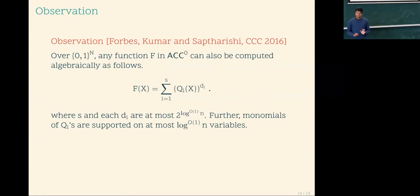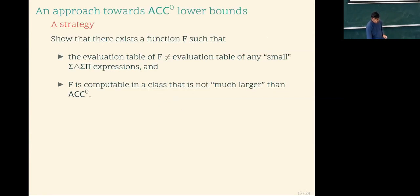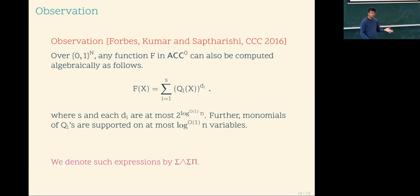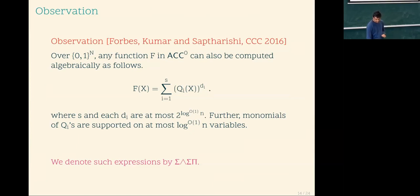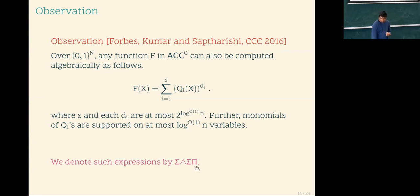This was first initiated by Forbes, Kumar, and Saptharishi, but they could not show lower bounds for this class of circuits — they could show it for bounded-depth circuits where instead of powers, they had products of low-degree polynomials. The first thing I did was show unconditional syntactic lower bounds against this class: I have a polynomial whose Boolean part is in GapL, yet it does not have any quasi-polynomial-sized depth-four circuits of this form. However, it is a syntactic lower bound, not a functional one yet.